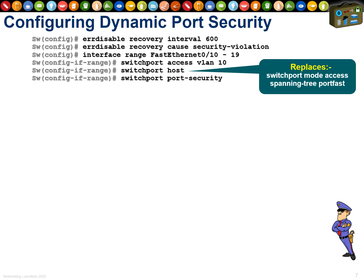A new command: 'switchport host' — a lovely shortcut from Cisco that gives you two commands for the price of one. It applies 'switchport mode access' and 'spanning-tree portfast'. Also useful: 'interface range fastethernet 10 to 19' lets you type commands once and program 10 interfaces simultaneously instead of repeating them.